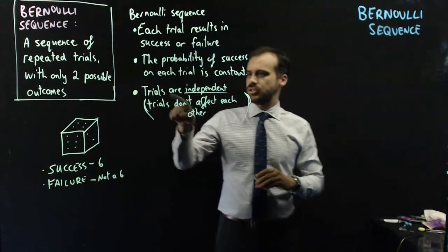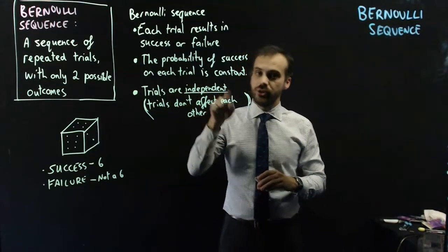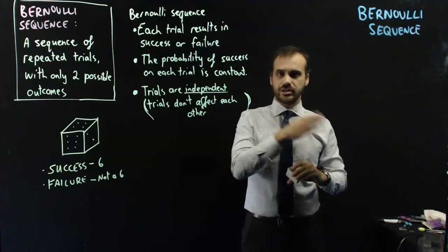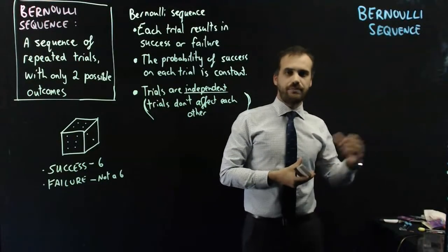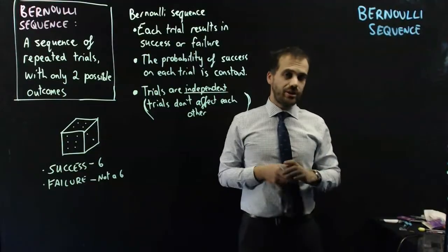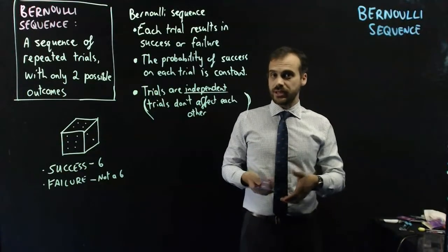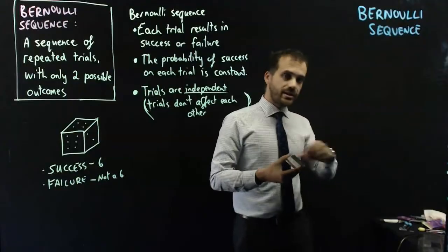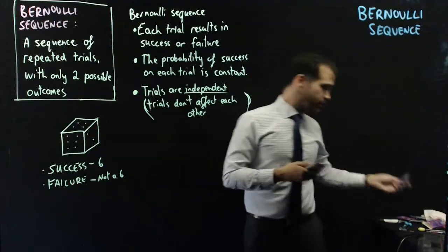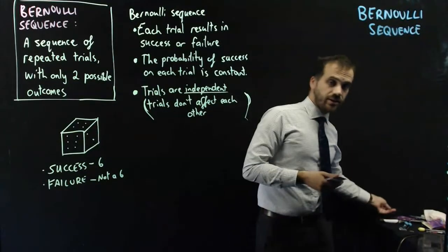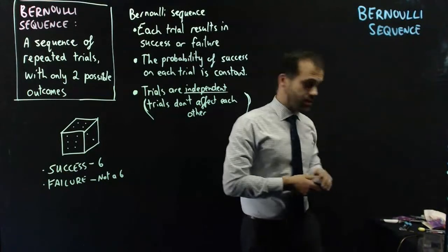So, the trials are not independent. The trials are dependent upon each other. If I pick an ace, it's less likely I'll pick an ace the next time. If I don't pick an ace, it's more likely I'll pick an ace. So, picking these cards out and putting them over here is not a Bernoulli sequence.